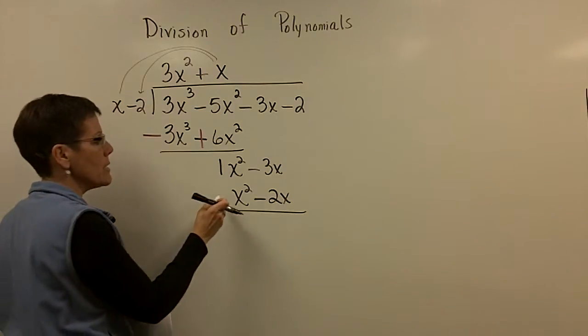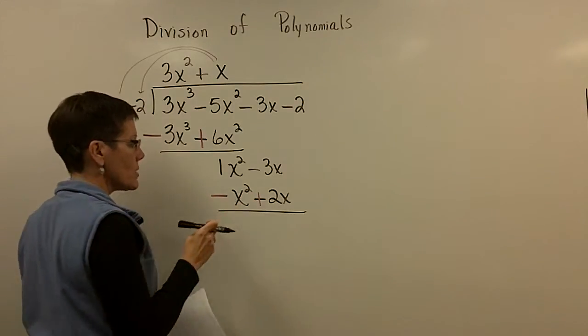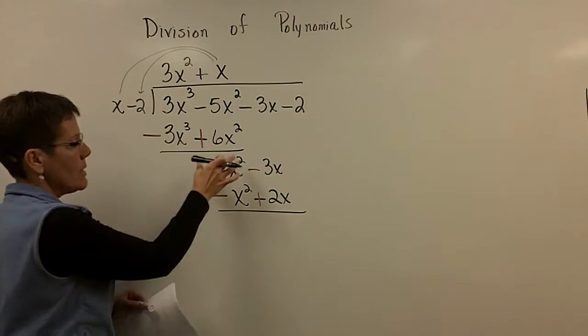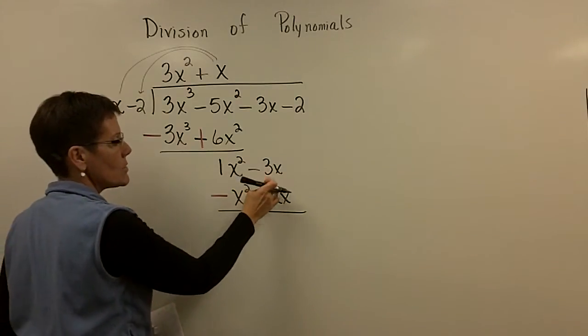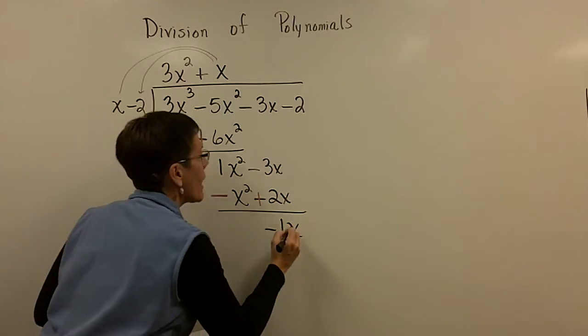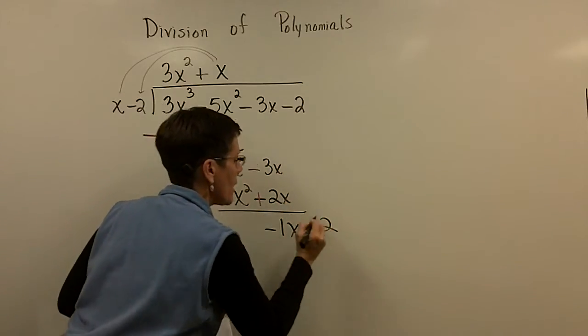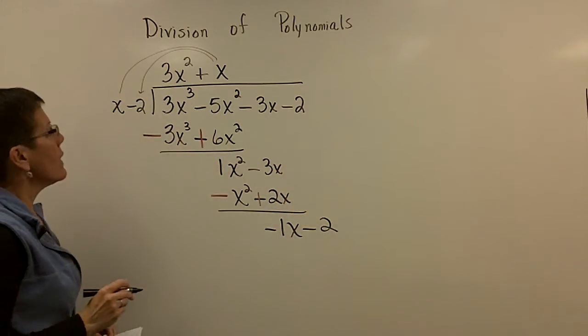And now because you're going to subtract, you change the sign and change the sign. The x squareds add to be 0. A minus 3 and a positive 2 add to be a minus 1x. And then I'm going to bring down my minus 2.